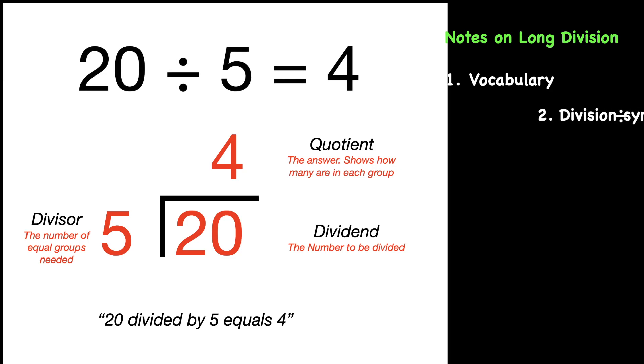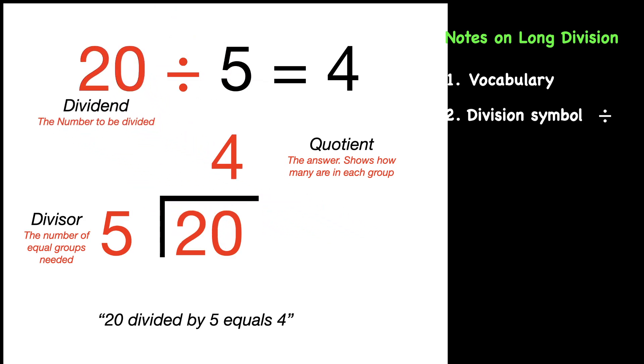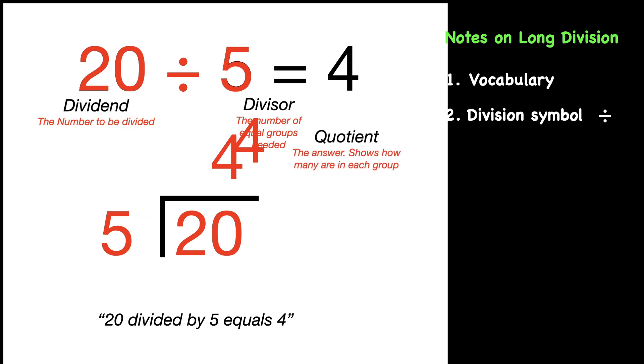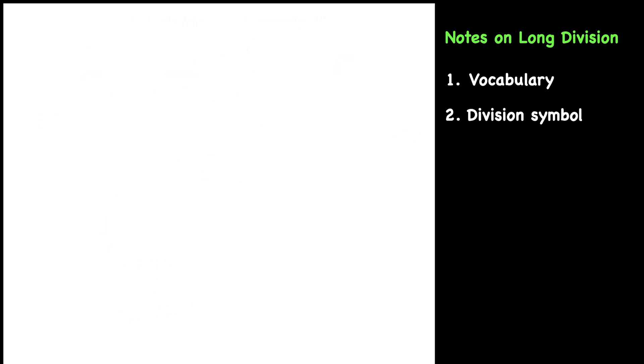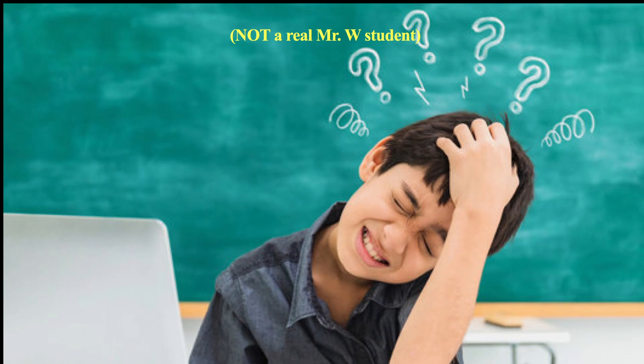We could also show it with a traditional division symbol. The dividend of 20 would go first divided by our divisor of 5, and that would equal the quotient, or in other words the answer of 4. That reads the same: 20 divided by 5 equals 4. Now we know the basic vocabulary and basic ideas involved to do division.